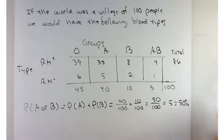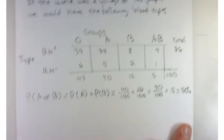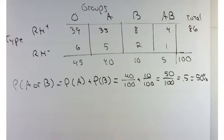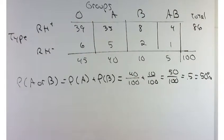Overall, there's a 50% chance of randomly selecting somebody with a blood type of A or B. All right, nothing too dramatic about that.